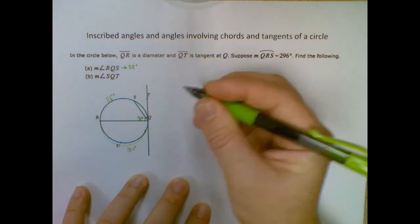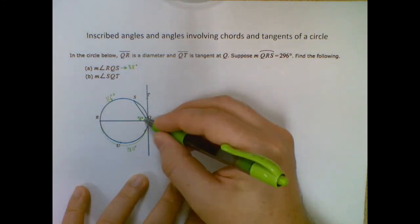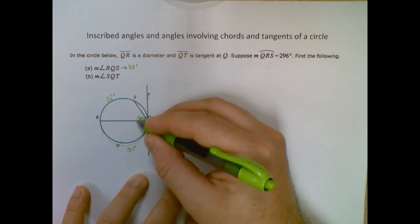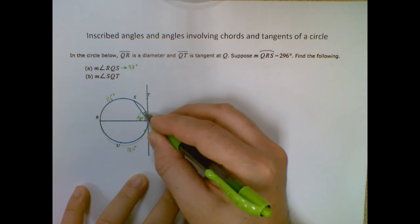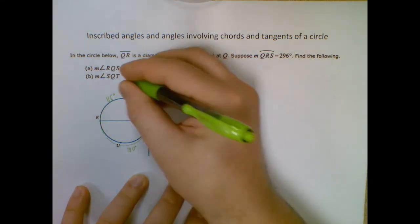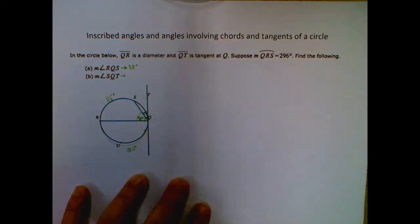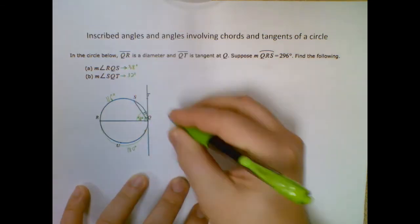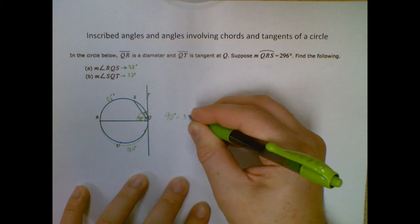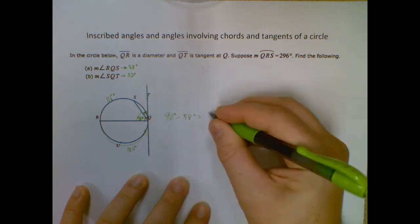So this whole thing is a right angle, which means it's 90 degrees. And I know this part of it's 58. So because of my angle addition, I should be able to do 90 minus 58 to find out this size, which is exactly what I'm going to do and find out that it is 32 degrees. So just 90 minus 58 will give me that 32.